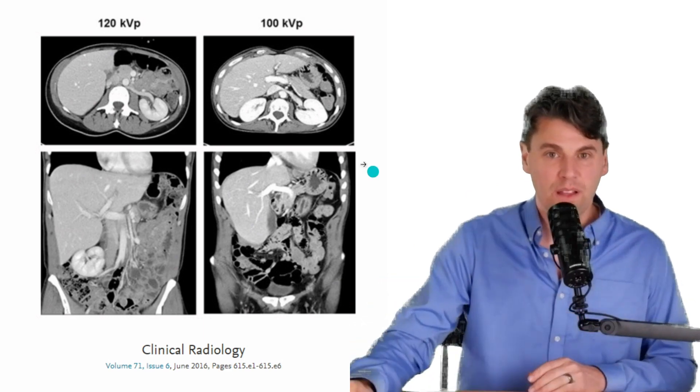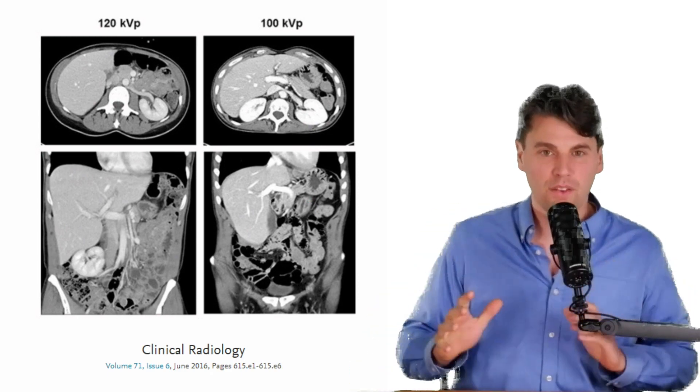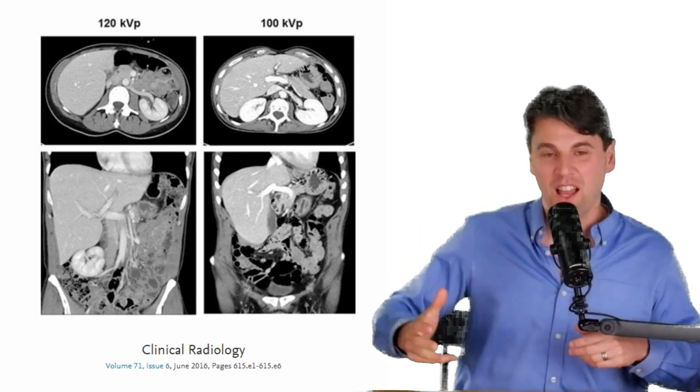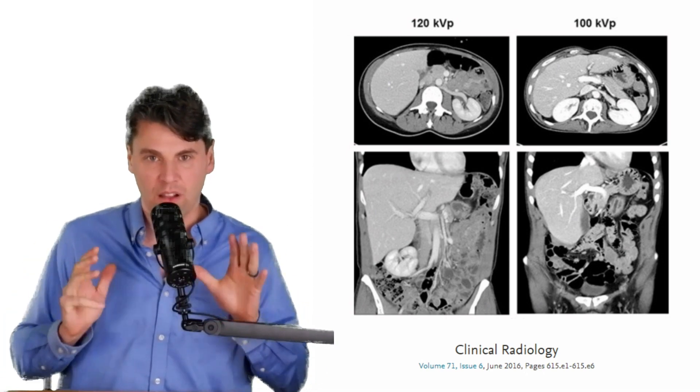And because of that, you can see these images have significantly better contrast. We've also talked about how there is no free lunch. And at lower KVPs, it is harder to penetrate larger objects.